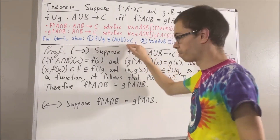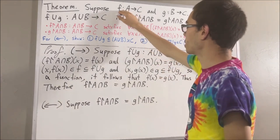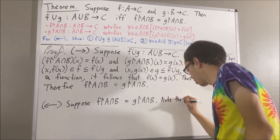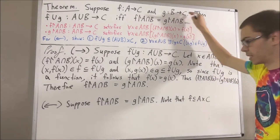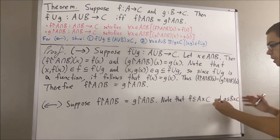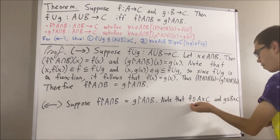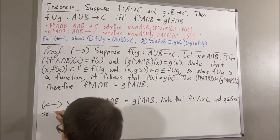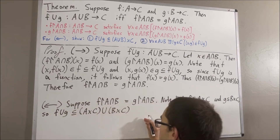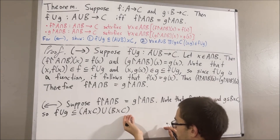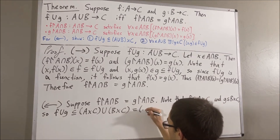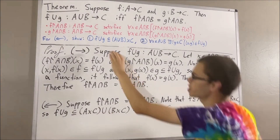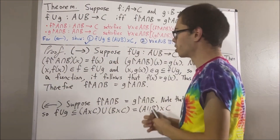Let's show the first condition. Since f is a function from A to C, f is a subset of A×C. And similarly, g is a subset of B×C. By properties of subsets and unions, the union of f and g must be a subset of the union of A×C and B×C. A property of Cartesian products tells us this equals (A∪B)×C. So the union of f and g is a subset of (A∪B)×C, which is precisely what we wanted to show. This proves condition one.